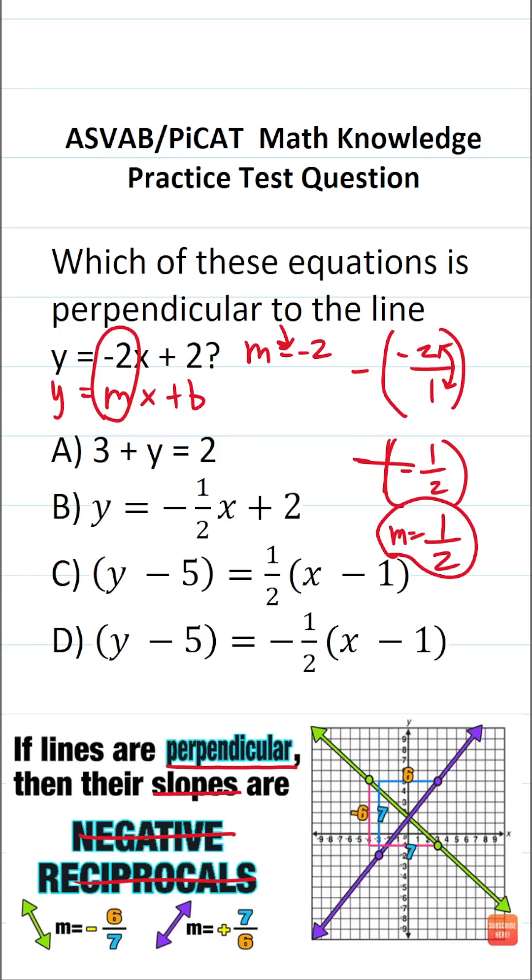So let's go through these answer choices and find the equation of the line that has a slope of 1 half. If we subtract 3 from this first answer choice, this becomes y equals negative 1, which is a horizontal line. It doesn't have a slope.